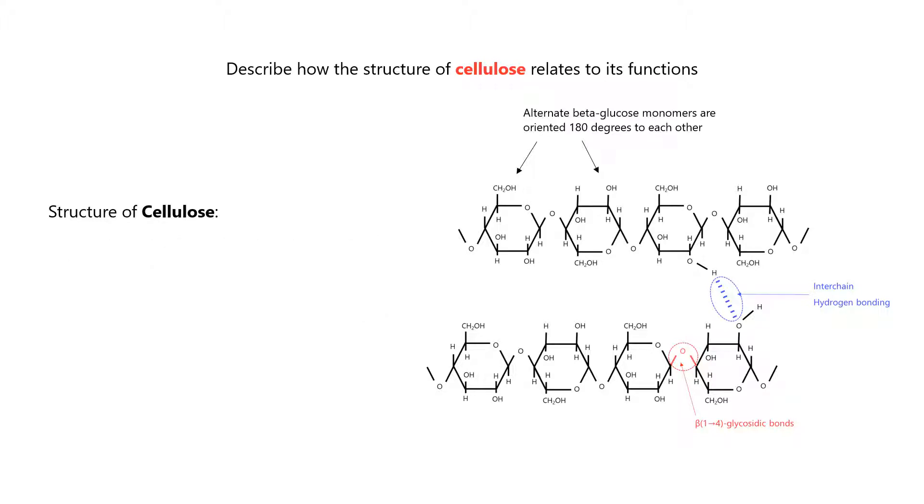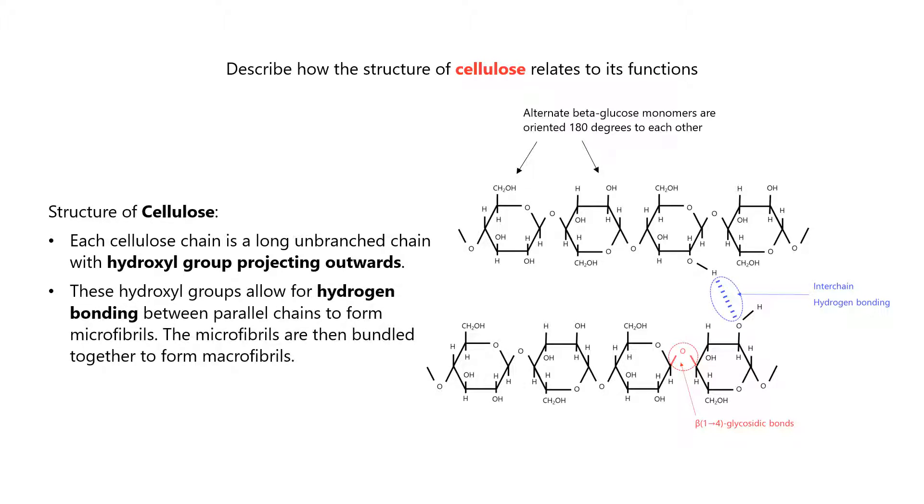Each cellulose chain is a long, unbranched chain with hydroxyl groups projecting outwards. These hydroxyl groups allow for hydrogen bonding between parallel chains to form microfibrils. The microfibrils are then bundled together to form macrofibrils.